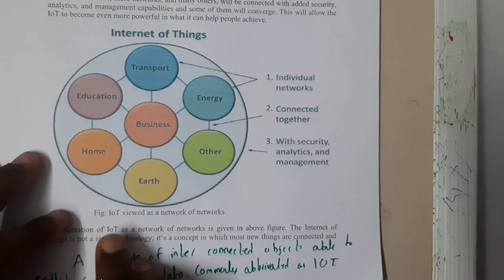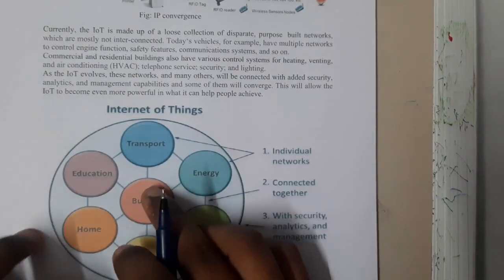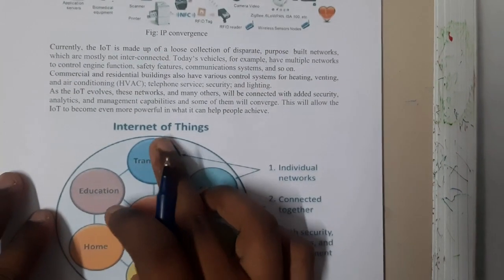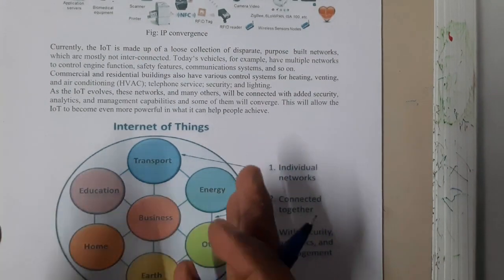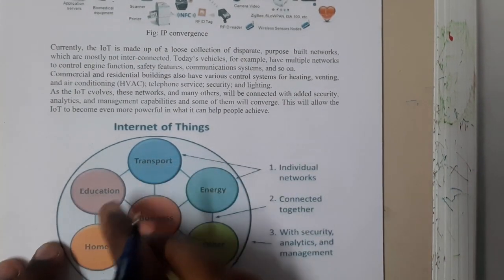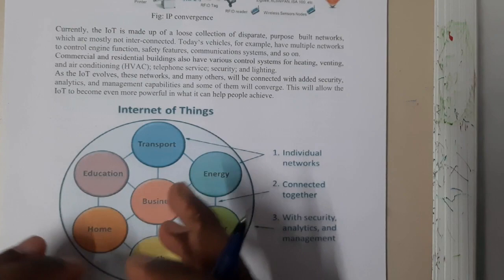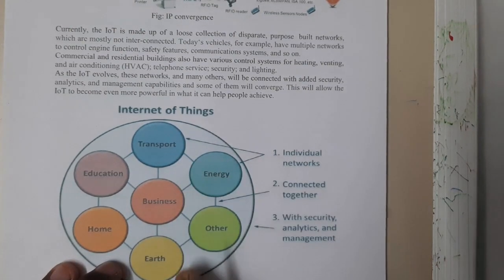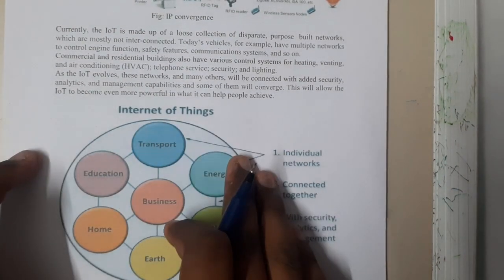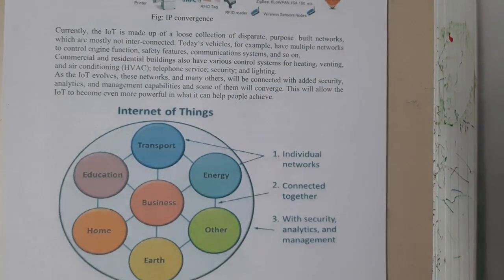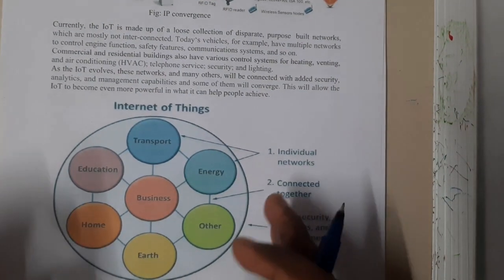IoT can also be a network of networks. For example, assume there is a network belonging to transportation in your locality, another for state education commission, and so on. If there is a connection between them and it forms a proper system, you can also call that Internet of Things.